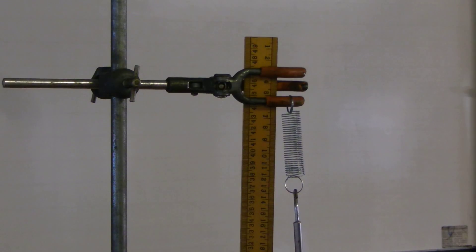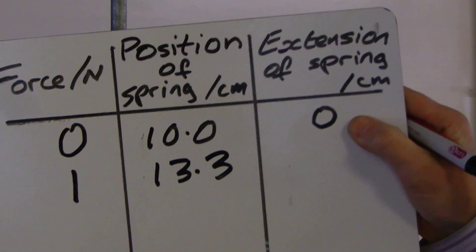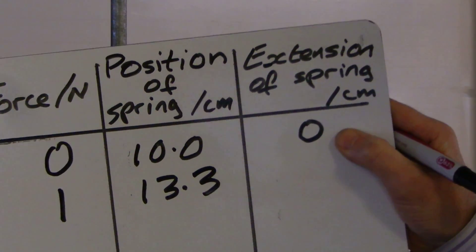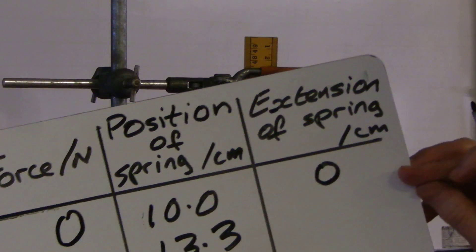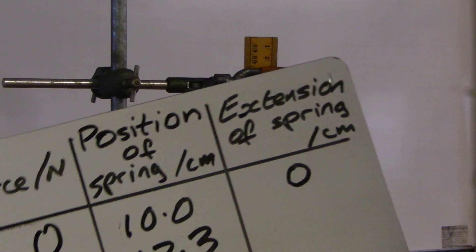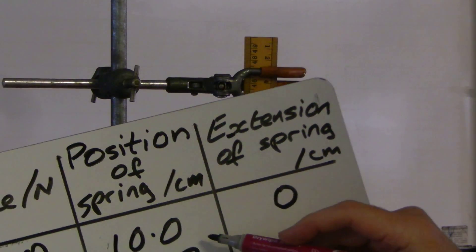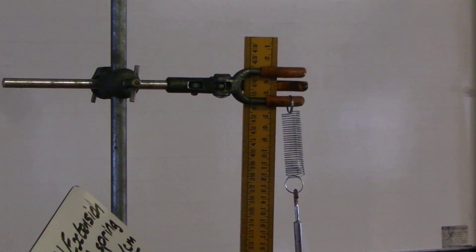So back to my results. This is now 1 newton. And the spring position is now 13.3 centimetres. So my extension will be how much? 13.3, take away 10. So that's going to be 3.3.